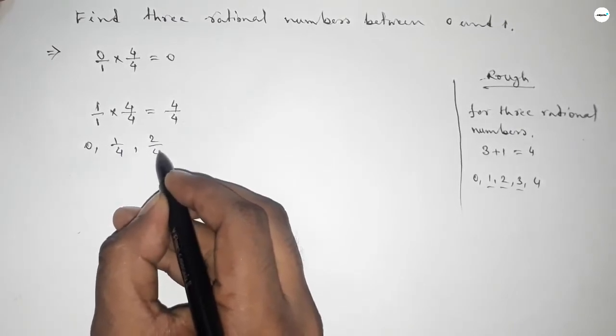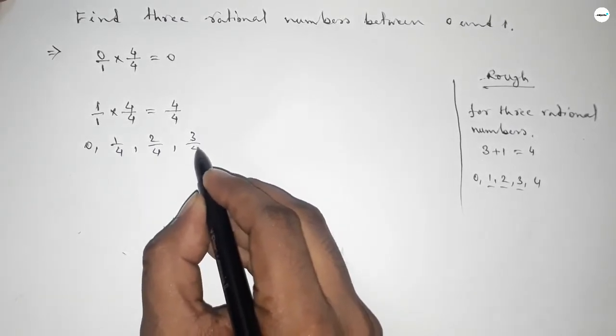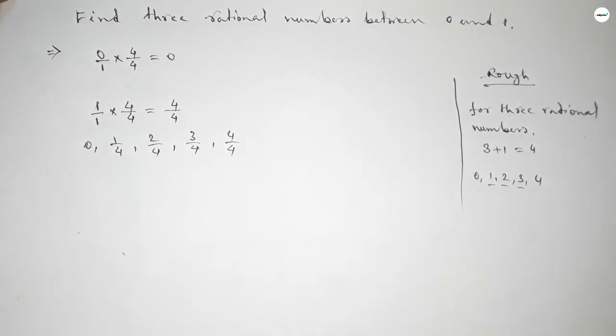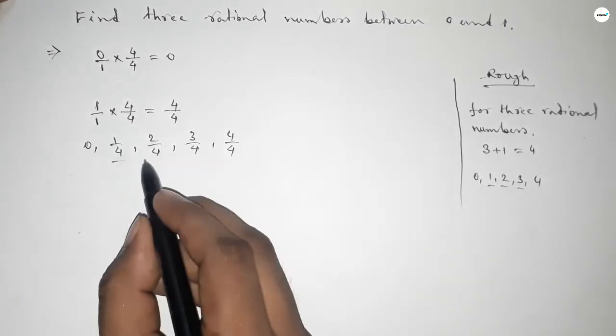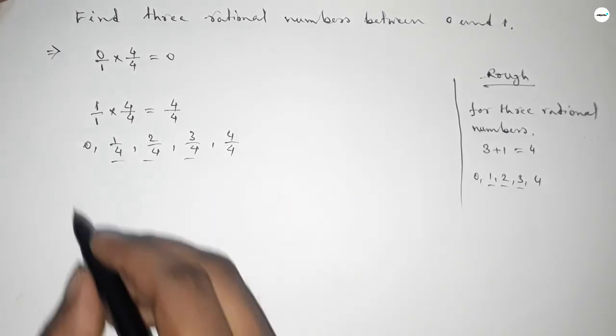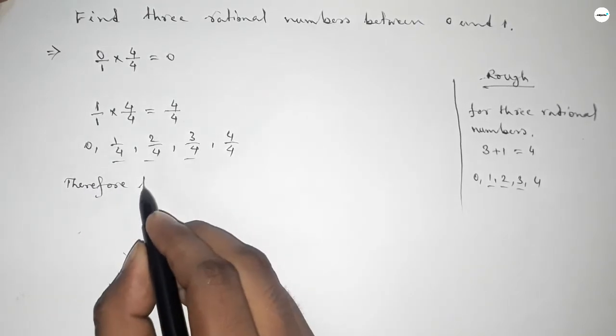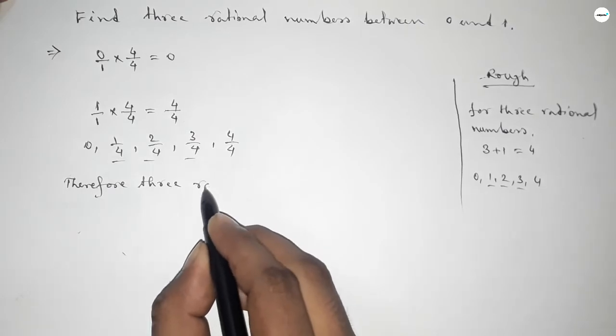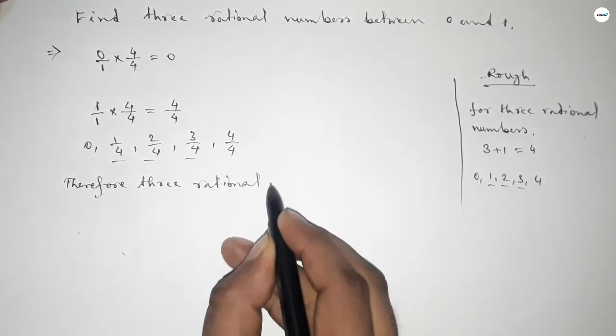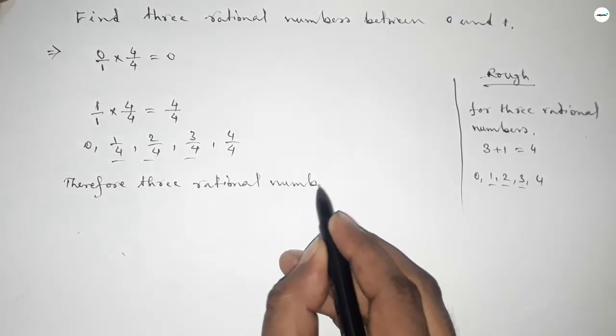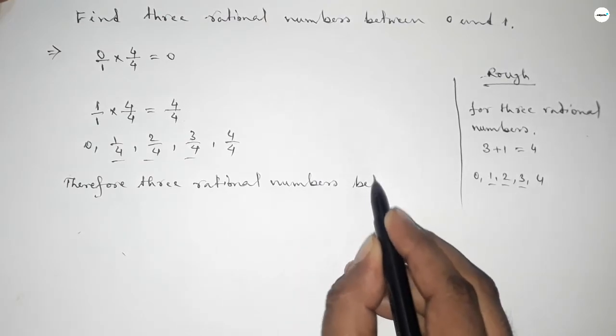So here all the rational numbers are 0, 1 over 4, 2 over 4, 3 over 4, 4 over 4. Among these, these are the required three rational numbers between 0 to 1.